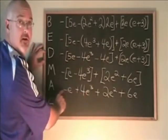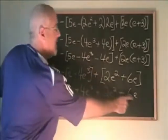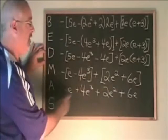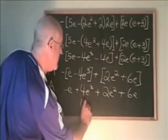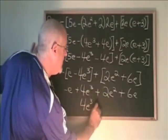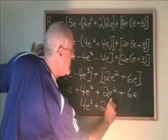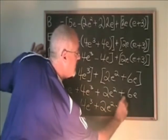I'm going to remove this bracket because it is no longer necessary, and I get plus 2e squared plus 6e. The only similar terms that are left are the negative e and the plus 6e, and negative e plus 6e is 5e. So my answer will be 4e cubed plus 2e squared plus 5e.